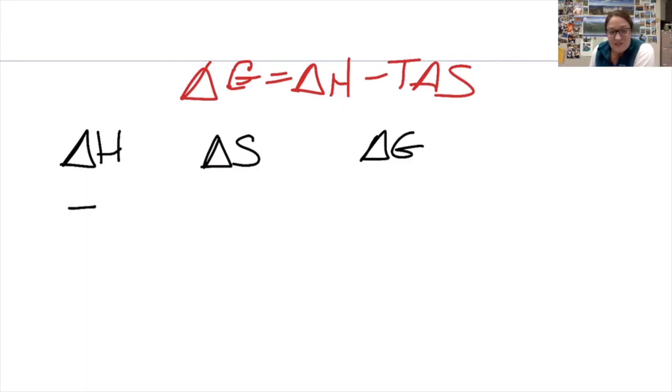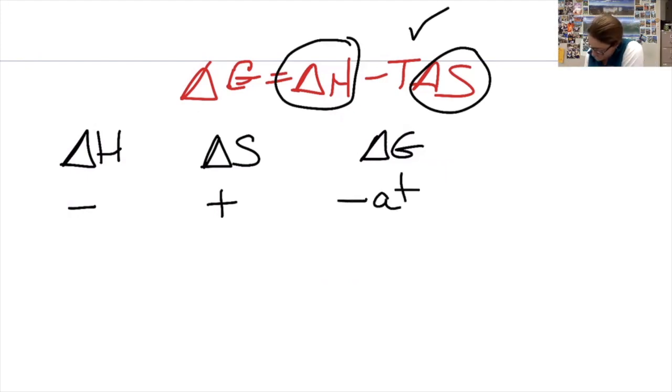If the reaction is exothermic and increases in disorder, so a combustion reaction, ammonia breaking into N2 and H2, those are both having an increase in disorder. If it tends to be exothermic and have an increase in disorder, then if I plug in a negative number here and a positive number here, no matter what the value of temperature is, I'm always going to get a negative value.